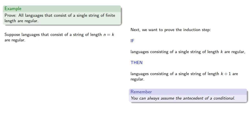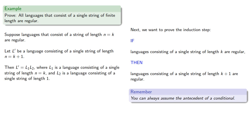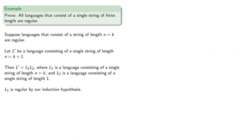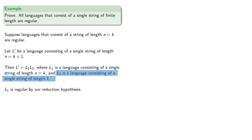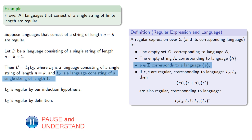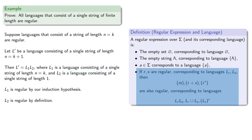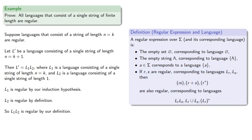Let's begin by assuming that languages that consist of a single string of length n equals k are regular. Now let L' be a language that consists of a single string of length k plus 1. We can describe L' as a concatenation of two languages, where L1 is a language consisting of a single string of length n equals k, and L2 is a language consisting of a single string of length 1. Now L1 is regular by our induction hypothesis — that's the starting point we're allowed to assume. L2, because it consists of a single string of length 1, is also regular by definition. So the concatenation L1, L2 is also regular by definition, and consequently L' is regular.